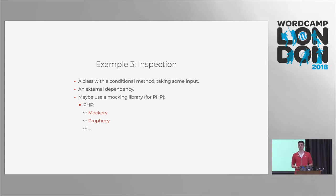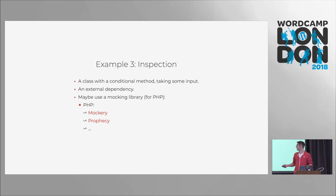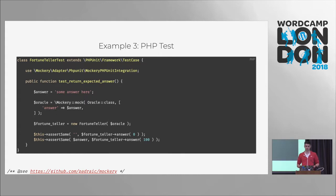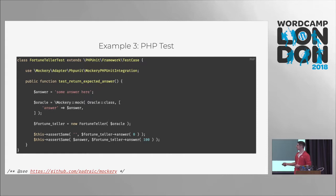What we're using in addition to the testing framework is a mocking library. Depending on what you use for a testing framework, this may be available in the testing library itself — for example, PHPUnit has built-in mocking capabilities, Jest as well — but you can use something additional, for example Mockery or Prophecy for PHP. I don't list JavaScript because in JavaScript we can just overwrite anything that exists in the global scope; in PHP you cannot do this that easily. This is one way to design the PHP test — I'm using Mockery here.